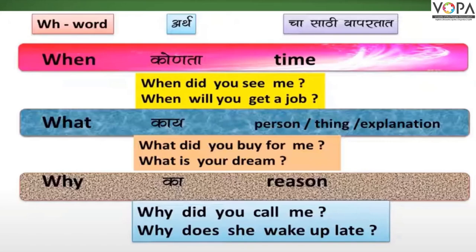Tu la kadhi kam milnar ahe? Second word: WHAT, manje kai? The word WHAT is used to ask about a person, a thing, or an explanation. For example: What did you buy for me? Tu maze sathi kay vikdanles? What is your dream? Tuze swapna kay aahe?